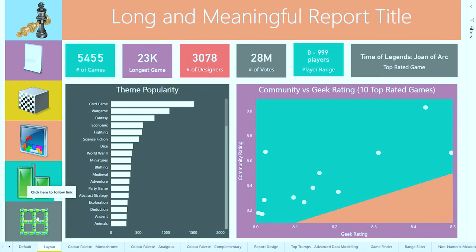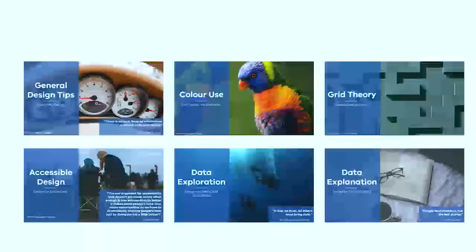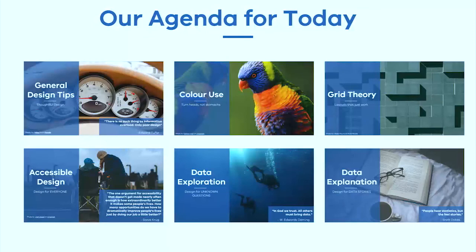Grid theory also forces you to commit to minimum visual sizes — for example, at least 70 pixels high and 150 pixels wide — so you never try to squeeze three visuals into space allocated for two. Sticking to the grid works beautifully and stops the habit of shaving 20 pixels here and there until everything is out of line. There's a blog post with a full article on this that I'll share at the end.